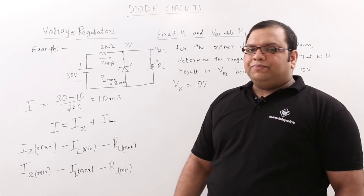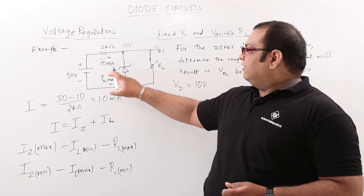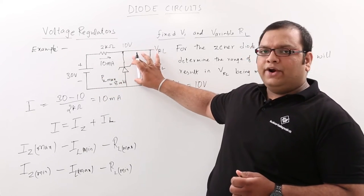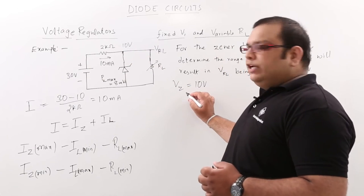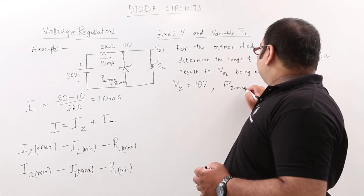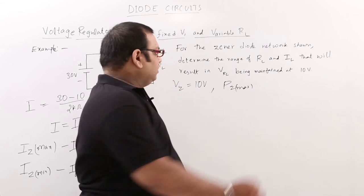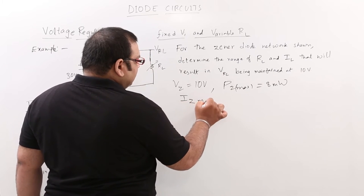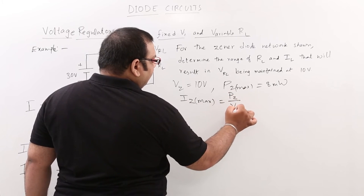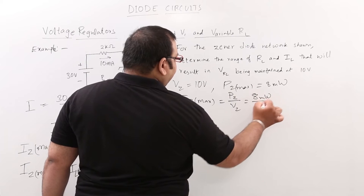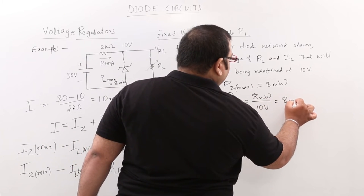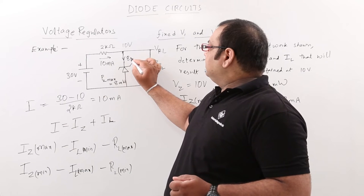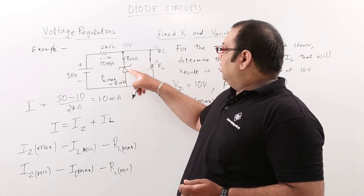Starting with the first condition: IZ maximum. Since maximum power dissipation PZ is given as 8 milliwatts, and we already know VZ is 10 volts, we can calculate IZ maximum. IZ maximum = PZ / VZ = 8 milliwatts / 10 volts = 0.8 milliamps. So 0.8 milliamps of maximum current enters the Zener diode.